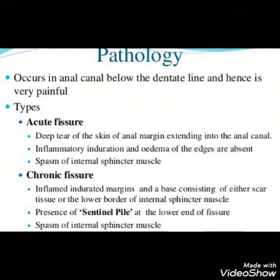In both acute and chronic fissure there is spasm of the internal sphincter muscle. In acute fissure there is a deep tear of the skin of the anal margin extending into the anal canal, but inflammatory induration and edema of the edges are absent. Whereas in chronic fissure the inflamed indurated margins and the base consist of scar tissue, along with the presence of a sentinel pile at the lower end of the fissure.